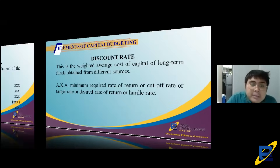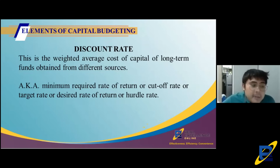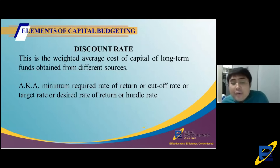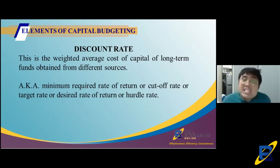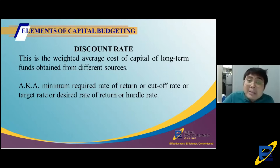The third element is the discount rate — the weighted average cost of capital used to compute present value. Other names for discount rate include: minimum required rate of return, cut-off rate, target rate of return, desired rate of return, and hurdle rate. In capital budgeting problems, this is usually given; it's computed in the cost of capital topic.